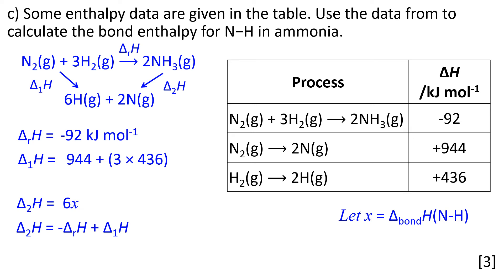Using Hess's law, Δ₂H starting from the ammonia going to the atoms equals minus the enthalpy of reaction, minus ΔᵣH going against that arrow, plus Δ₁H going with that arrow. Substituting the numbers in, Δ₁H equals +2252 kJ mol⁻¹.